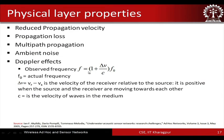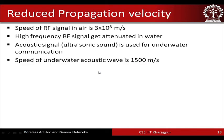Recalling from physics, the observed frequency through Doppler effect is f = (1 + Δv/c) × f₀, where f₀ is the actual frequency. So the actual frequency is changed — it basically increases. For RF in air the speed is 3×10⁸ meters per second, but high-frequency RF signals get attenuated in water, which is why acoustic signals are used for underwater communication.